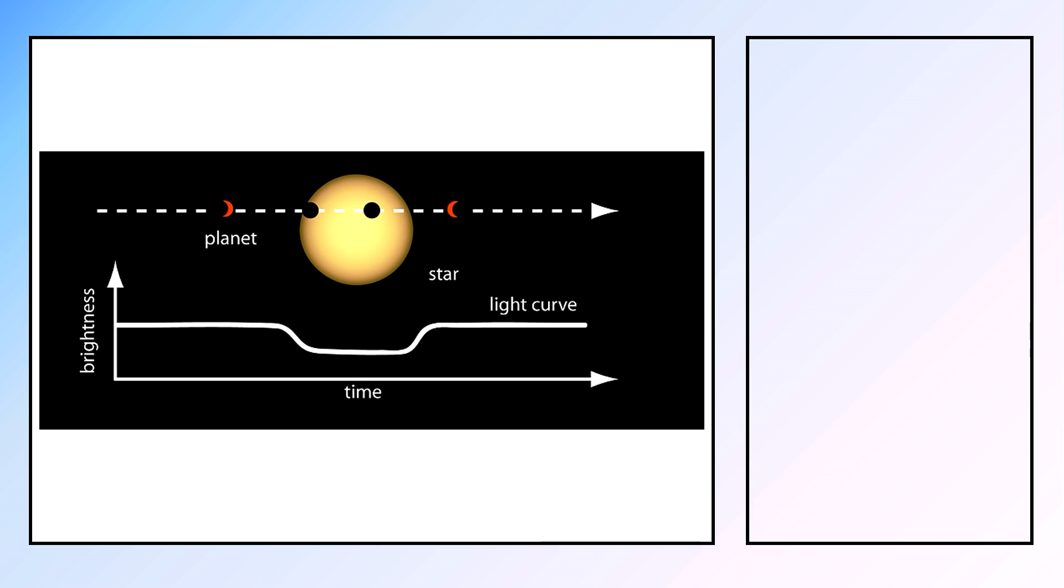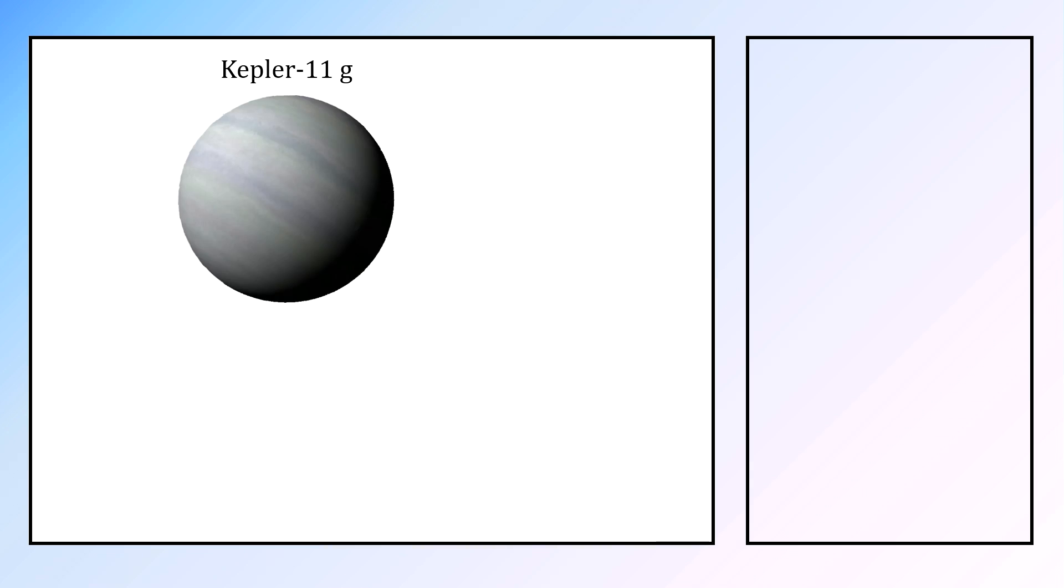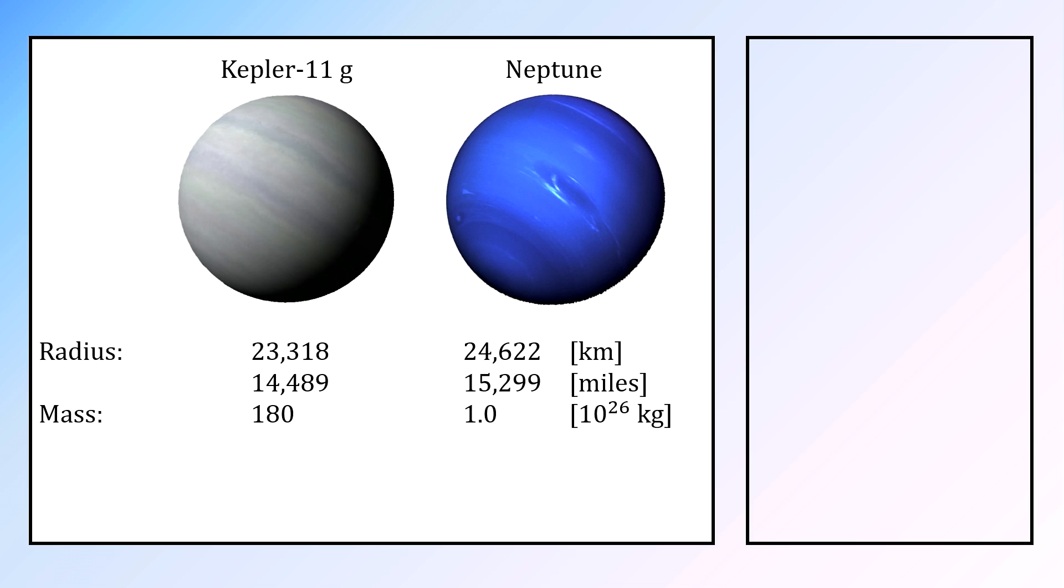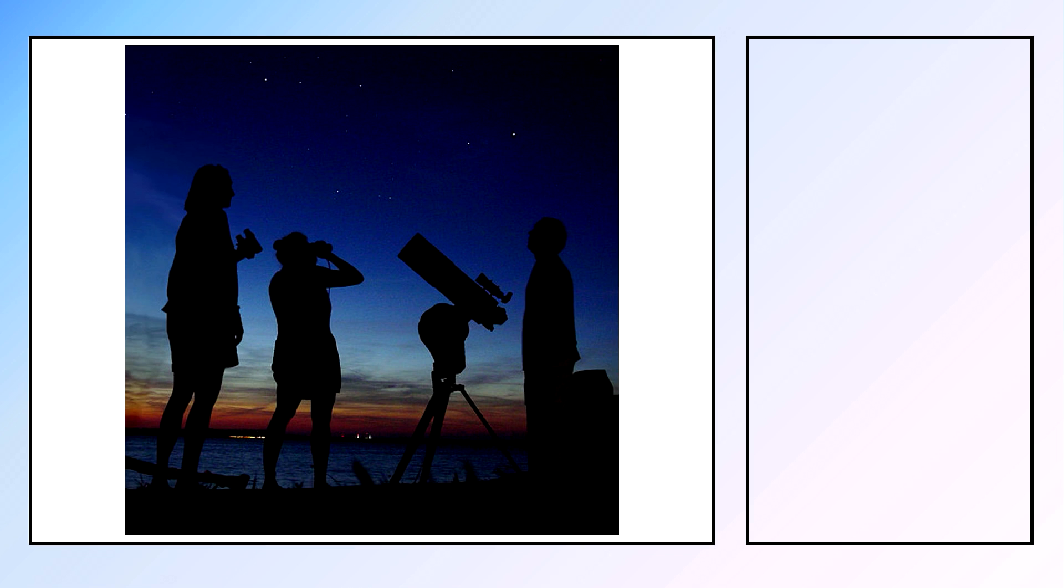One of the planets discovered using this method is Kepler-11g, a planet similar in size to Neptune located approximately 2,000 light years from here. In thousands of years of astronomy, scientists have figured out many relationships between parameters of these foreign planets.